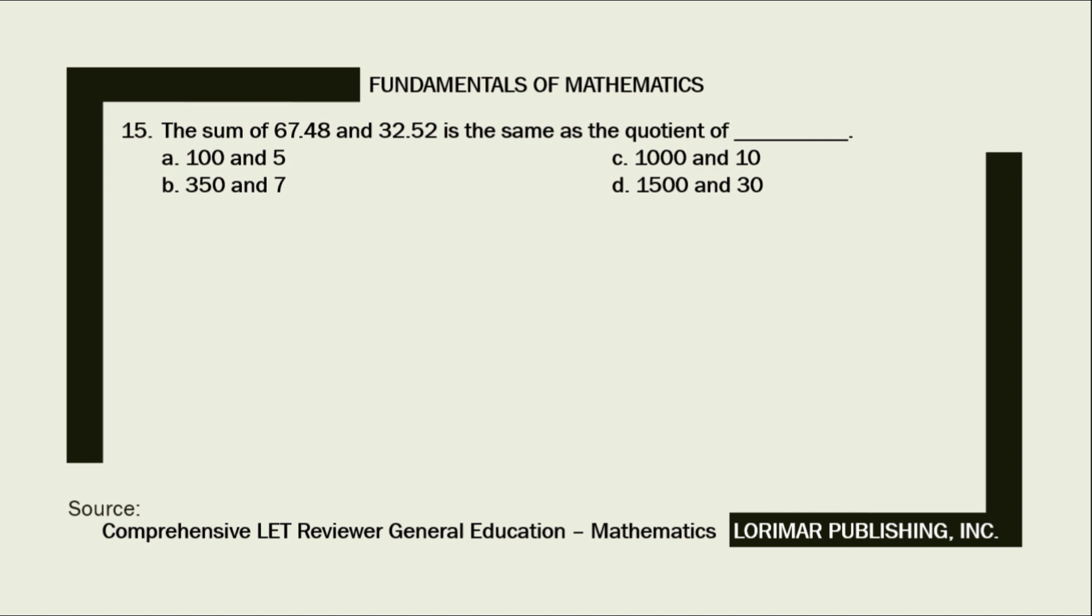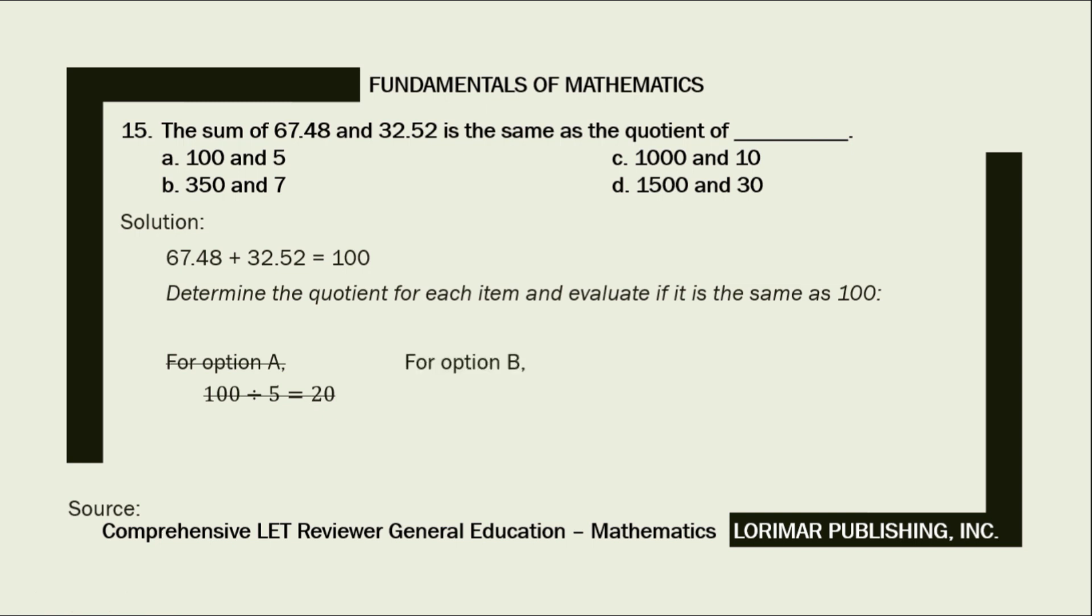Here is our solution. 67.48 plus 32.52 equals 100. Next, determine the quotient for each item and evaluate if it is the same as 100. For letter A, 100 divided by 5 equals 20. Letter A is not the correct answer. Letter B, 350 divided by 7 equals 50. Letter B is not the correct answer. Letter C, 1000 divided by 10 equals 100. So the correct answer is letter C, 1000 and 10.